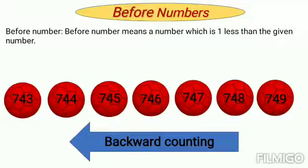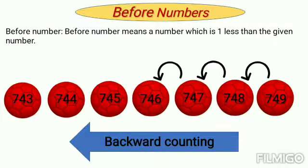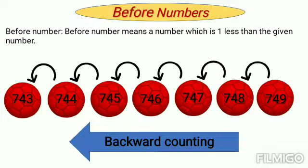Before number means a number which is 1 less than the given number. Here, you can see few 3 digit numbers written on the ball and you also see the arrow which shows backward counting. So, we will start from 749 in the backward direction. So, it comes 748, then 747, 746, 745, 744 and then 743.